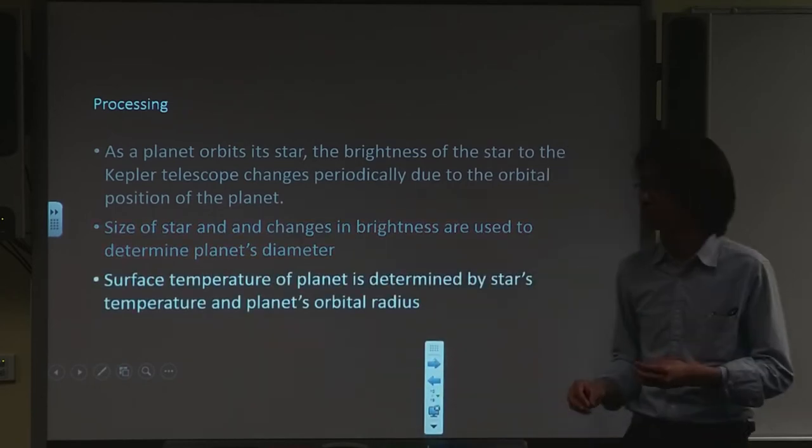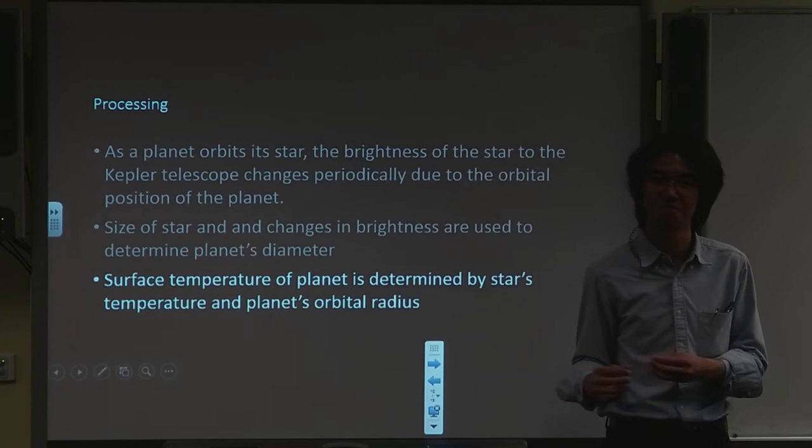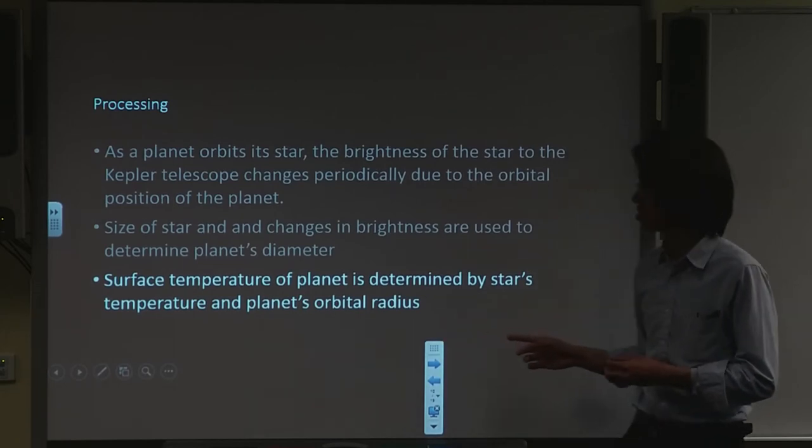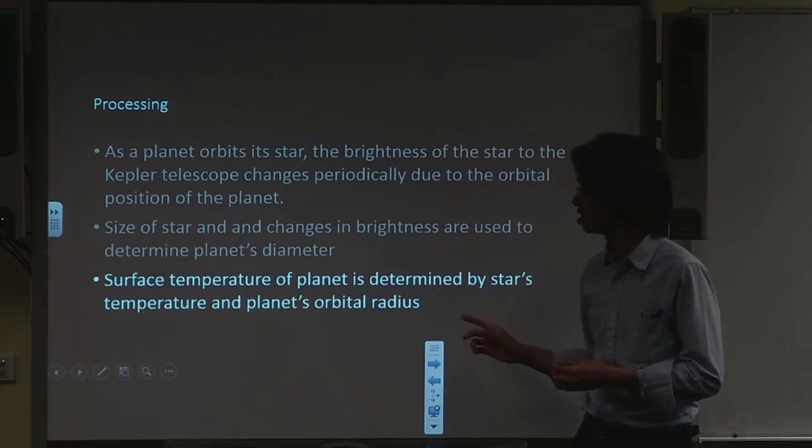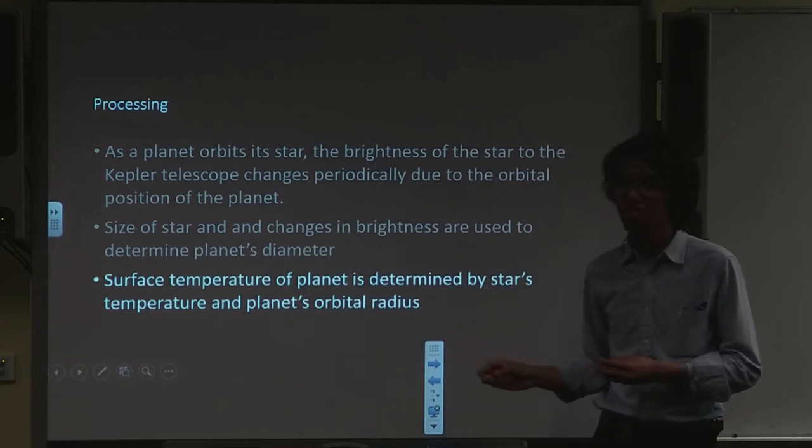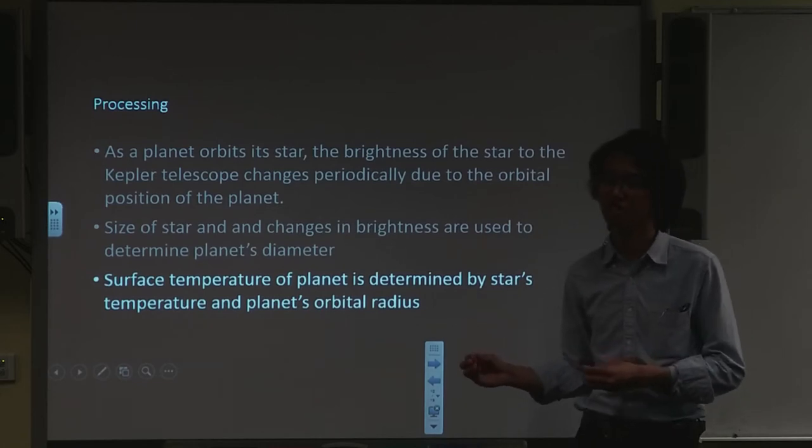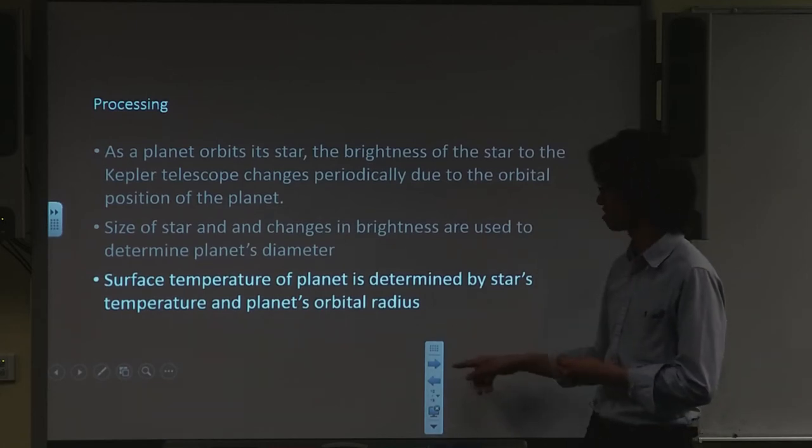Also, to measure the surface temperature of the planet, the orbital radius and the host star's temperature is observed. The further away the planet is from the host star, the cooler its surface temperature.